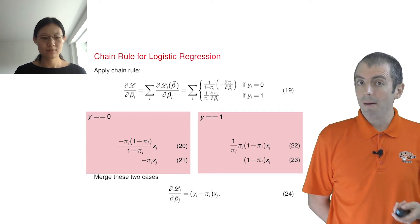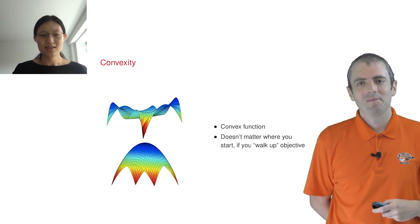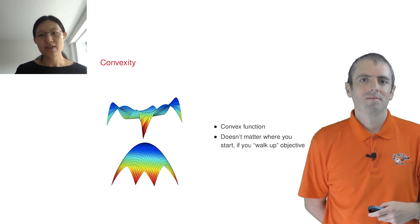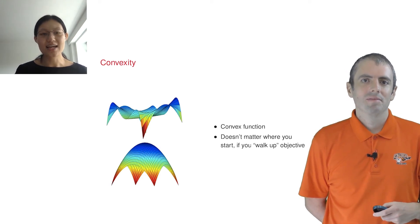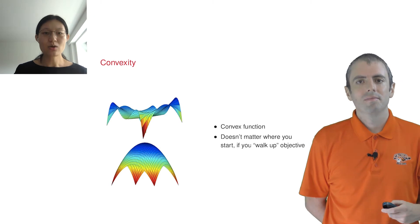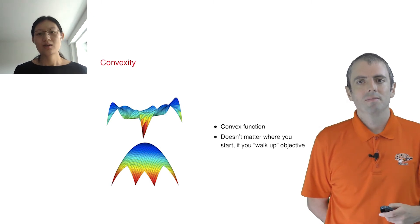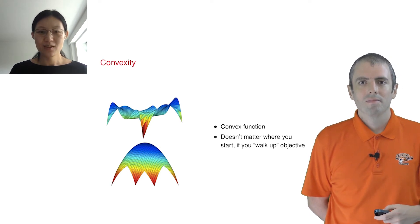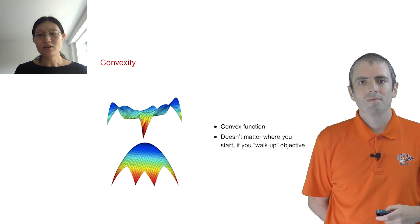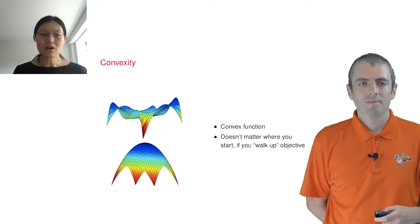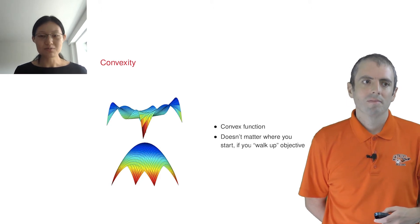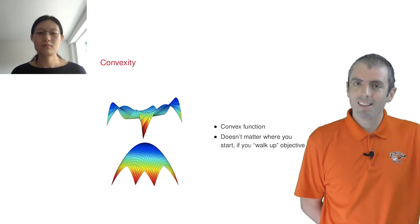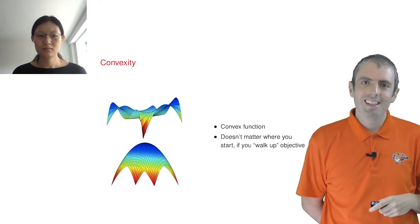Okay, then we can optimize the function now? Yes, and one nice property of the logistic regression objective function that we won't prove here is that it's convex. There's only one best answer. This won't be true for future models, even those we'll talk about later today. Thus, it doesn't matter where you start in terms of your betas. You can always get to a better place in your objective function. Ah, so the top picture here is non-convex and the bottom picture is convex.